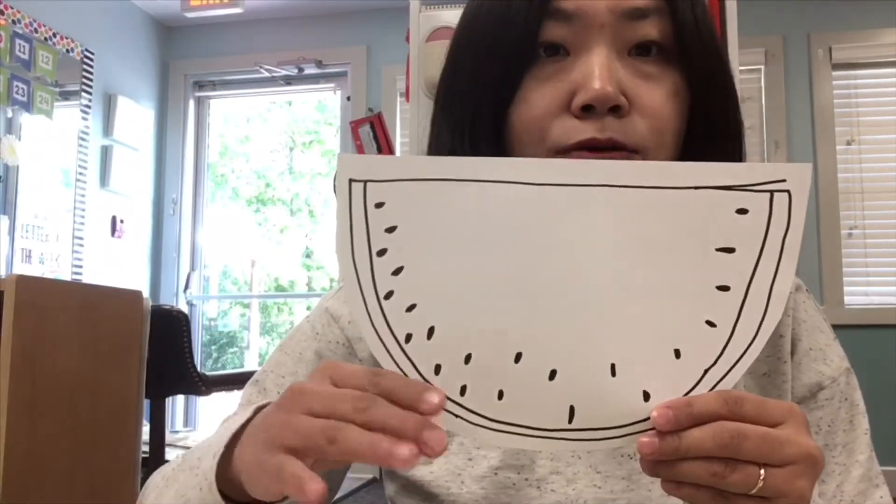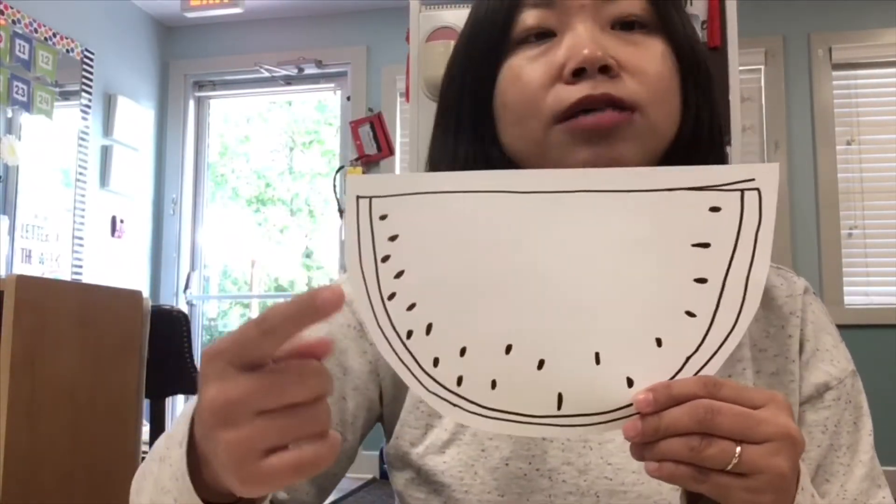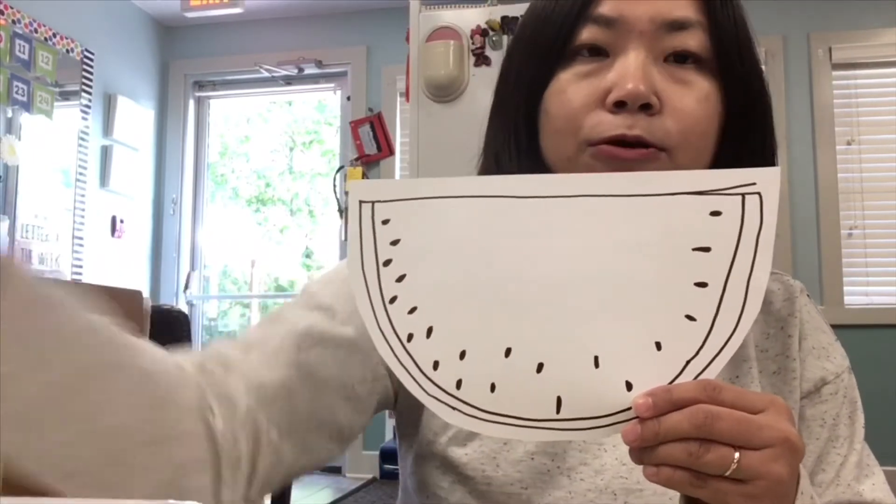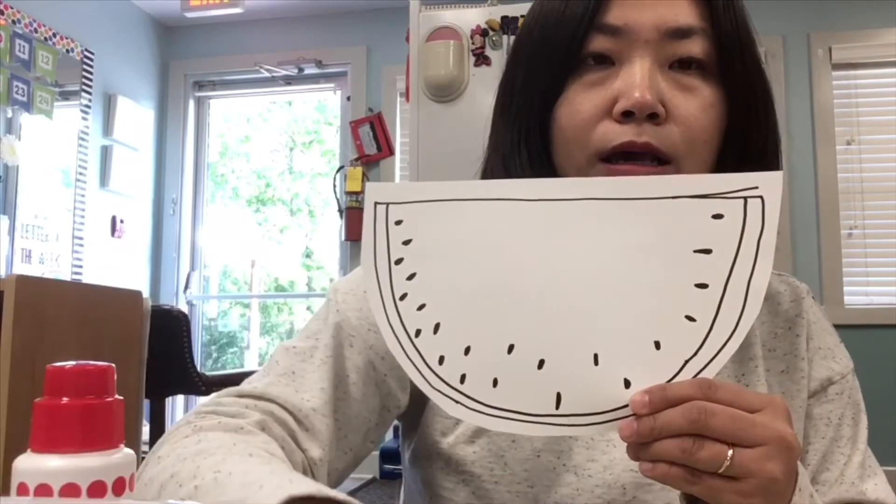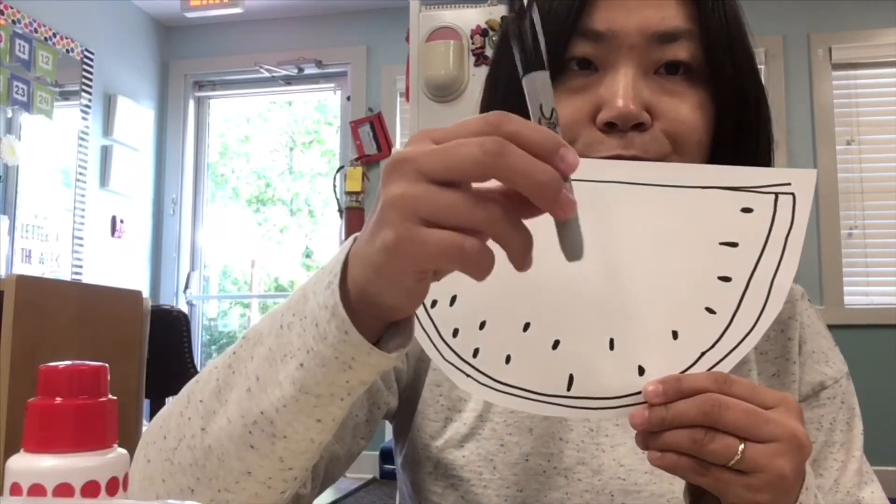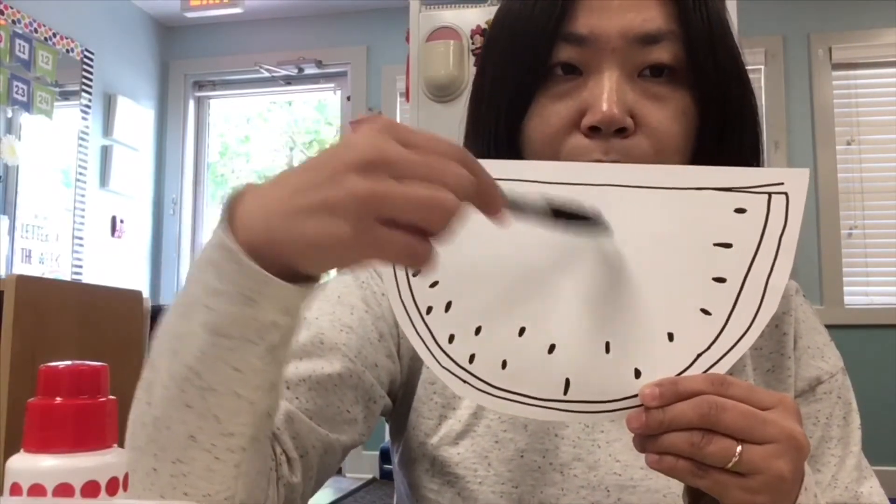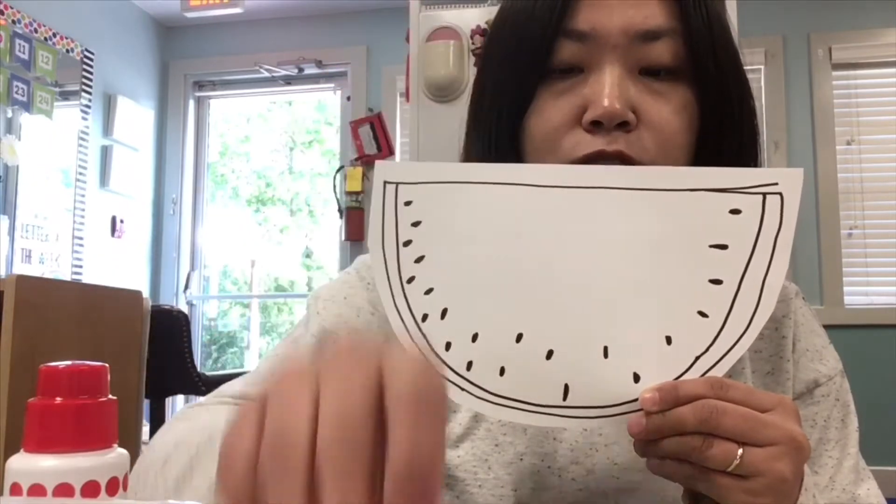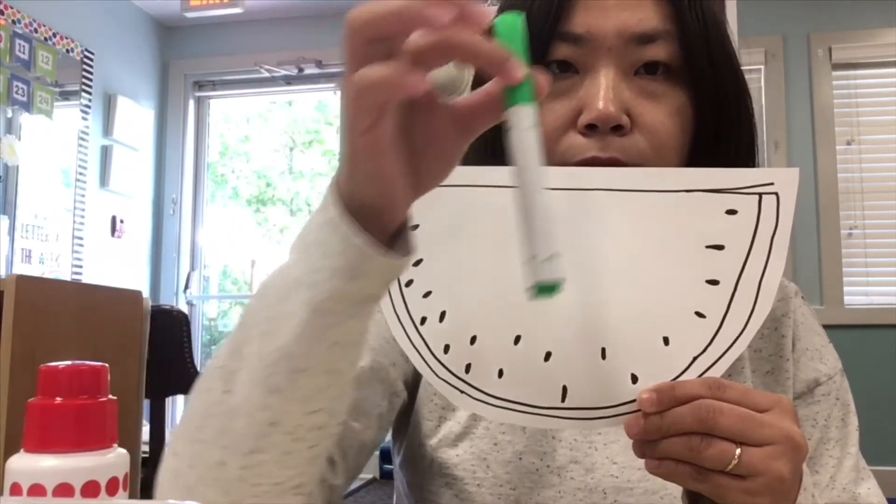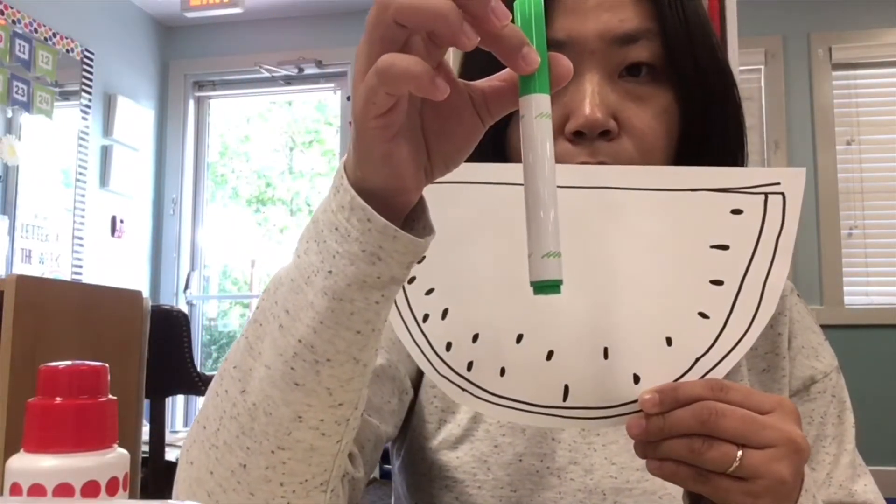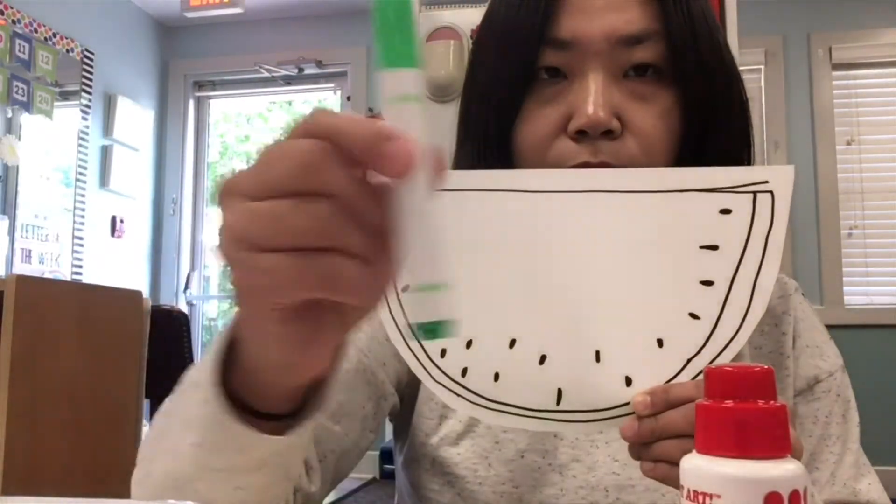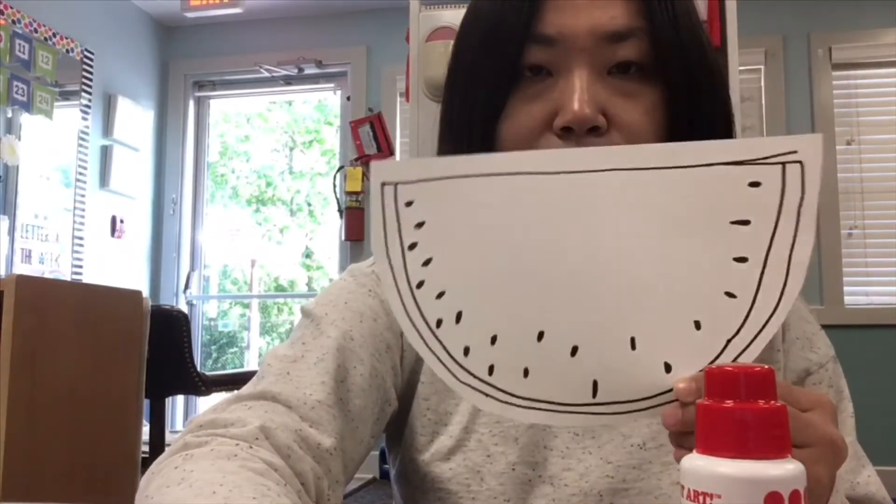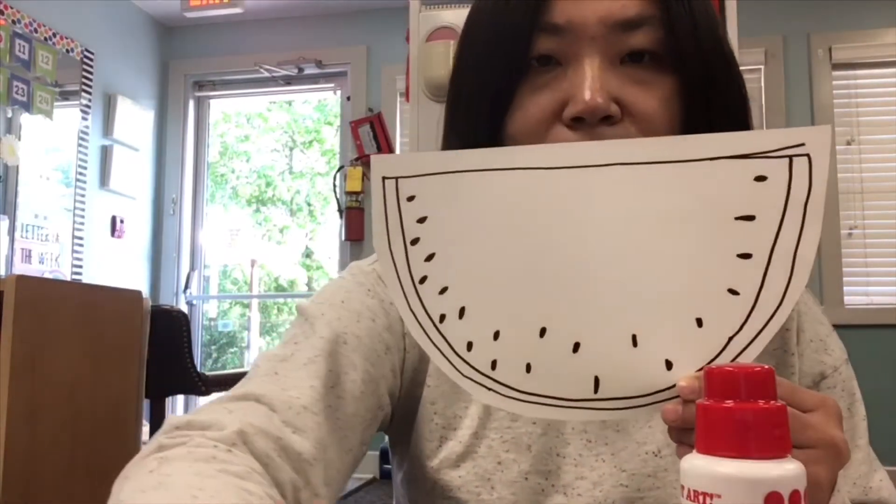If you don't have any of those, you can just put some red stickers on it. So today I'm going to use red dot dot, and I'm going to color more seeds, make more seeds on my watermelon with a Sharpie. And I'm going to use a green marker. So I'm using dot dot, marker, and a Sharpie. Let's make the art together.